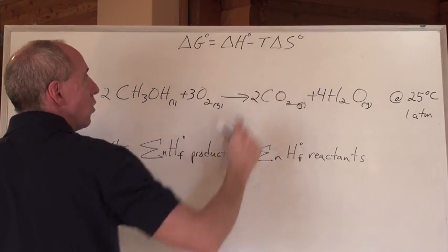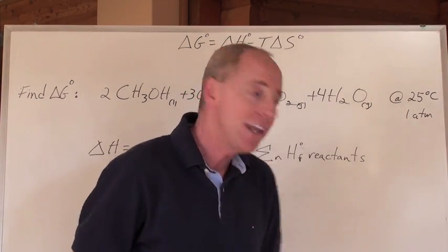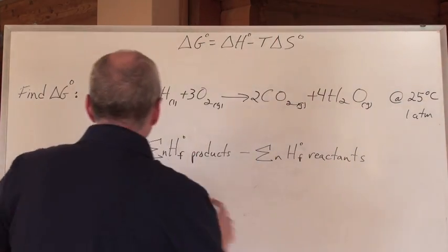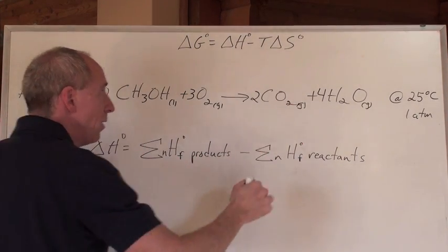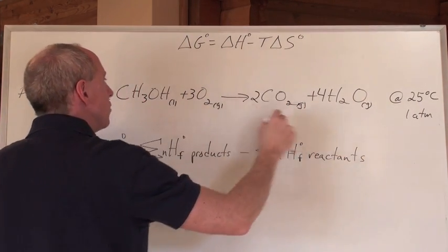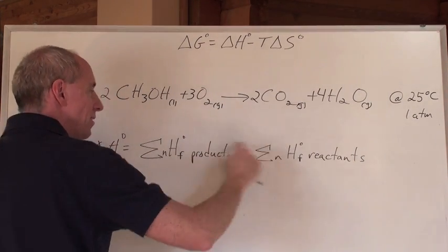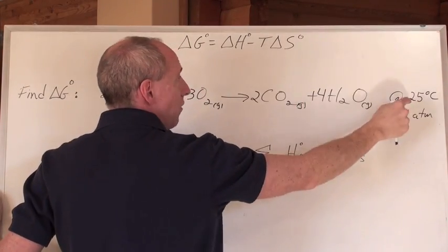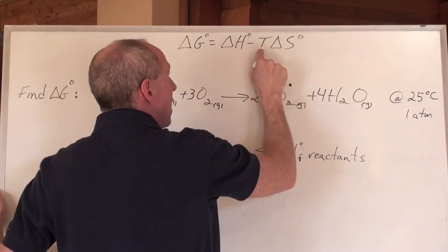Under standard conditions, delta H and delta S are also standard values. One approach: delta H can be calculated using the sum of heats of formation — products minus reactants. That's 2 times the molar heat of formation of CO₂ plus 4 times that of H₂O, minus 2 times that of methanol. Oxygen is zero because it's an element. Temperature T is 273 plus 25 equals 298 Kelvin.